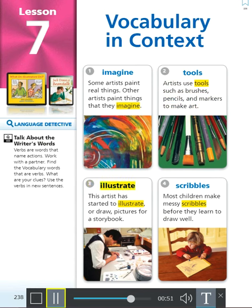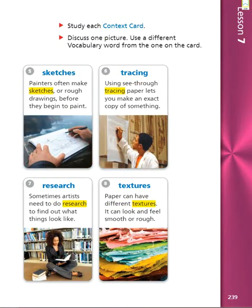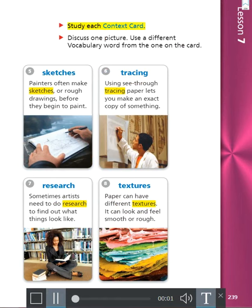3. Illustrate: This artist has started to illustrate, or draw pictures for a storybook. 4. Scribbles: Most children make messy scribbles before they learn to draw well. Study each context card. Discuss one picture. Use a different vocabulary word from the one on the card.